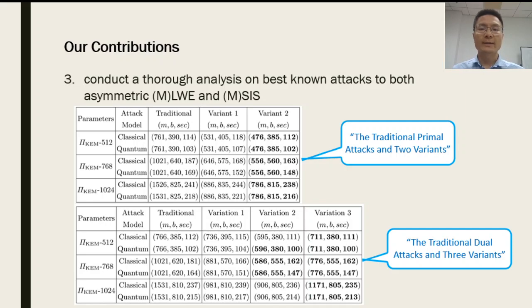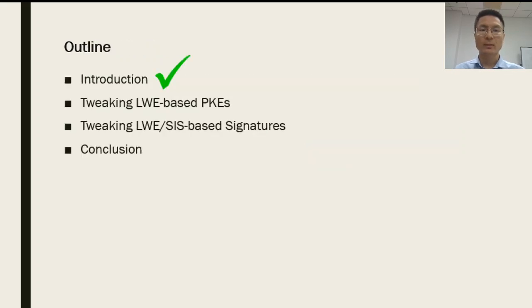Third, we adapt the best known attacks and their variants to the asymmetric problems, and conduct a thorough analysis on choosing concrete parameters. For example, we consider two variants of the primal attacks and three variants of the dual attacks to make use of the asymmetry of the underlying problems to reduce the complexity.